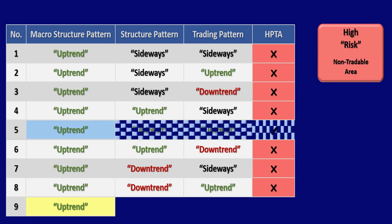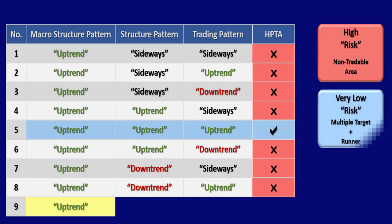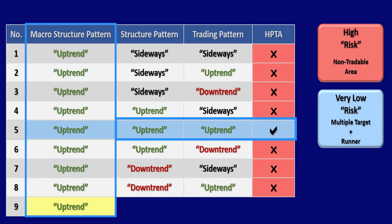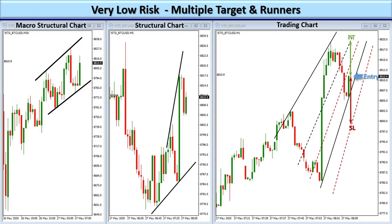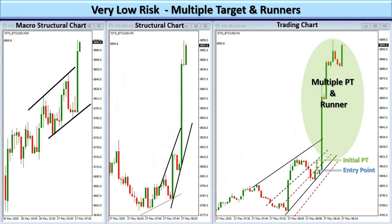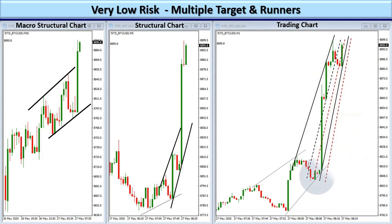Under the very low risk category, the macro structure chart pattern could be an uptrend and the structural and trading chart pattern also shows an uptrend. The potential to reach larger gains increases significantly and you could adapt to an exit strategy that allows you to set multiple targets and have runners. You may see more high probability trading areas and have opportunities to add to contracts.